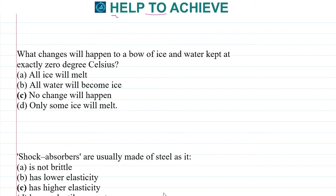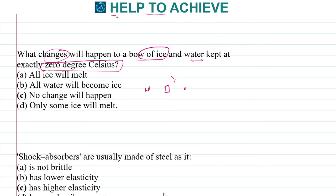Next: what changes will happen to a bowl of ice and a glass of water kept at exactly zero degrees Celsius? No change will happen at zero degrees Celsius. The state of them will remain the same — the ice will not melt and the water will not become ice. No change will happen at zero degrees Celsius.